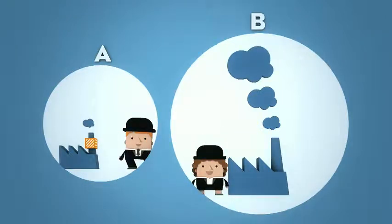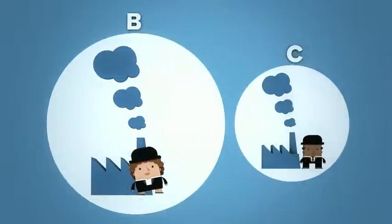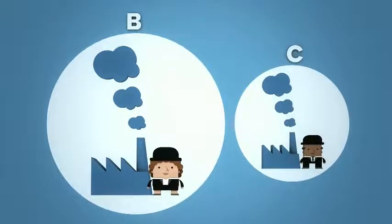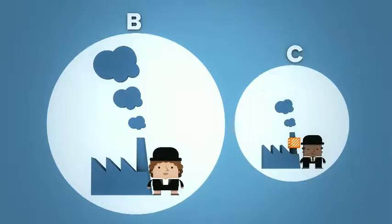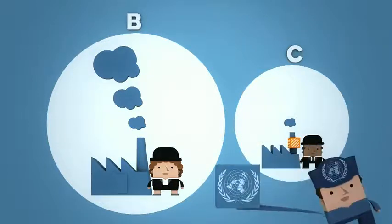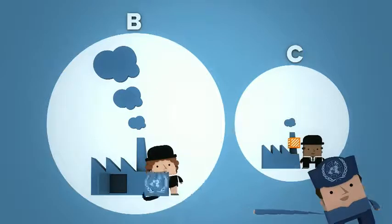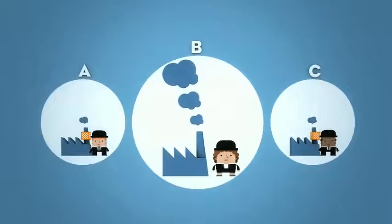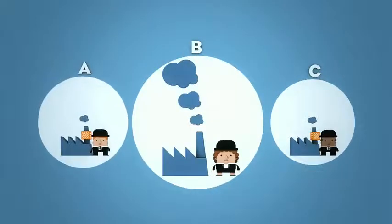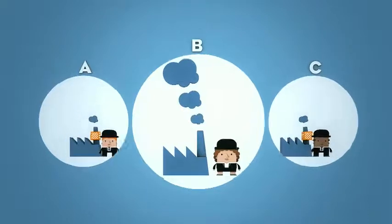However, Factory B can also cover its emissions by investing in CO2 reducing measures in Factory C, which is located in a developing country. Although this country does not have any obligations under the Kyoto Protocol, the UN can still approve the emission reductions and give Factory B carbon units equivalent to the reductions in Factory C. So, regardless of whether Factory B buys units from Factory A or C, the result is reduced emissions.